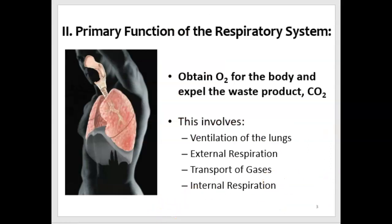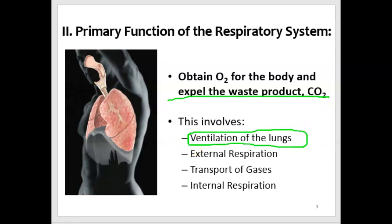Our second subtopic is the functions of the respiratory system. The main function is to obtain oxygen for all the body's cells and tissues, but also to expel a waste product called carbon dioxide. As cells use oxygen and organic nutrients, they produce CO2, which is a gas, and the lungs when ventilated will release CO2 into the atmosphere. We refer to this ventilation of the lungs — the exchange of air with the atmosphere — as external respiration.